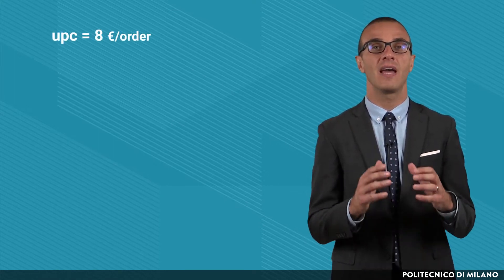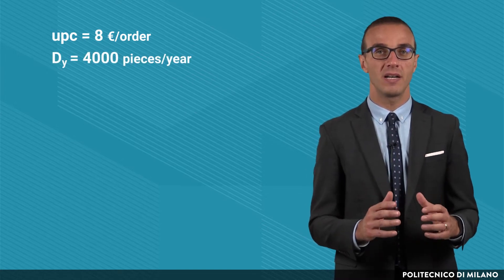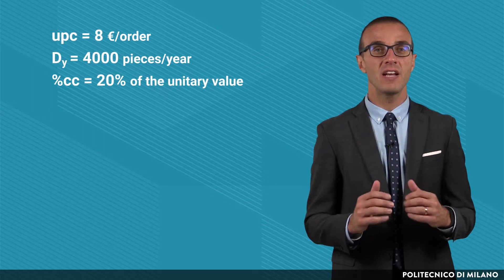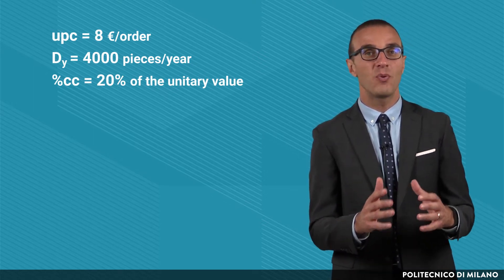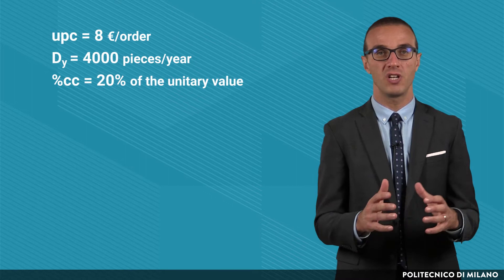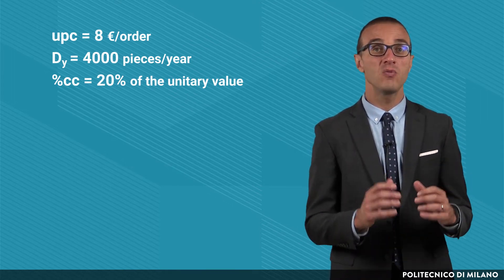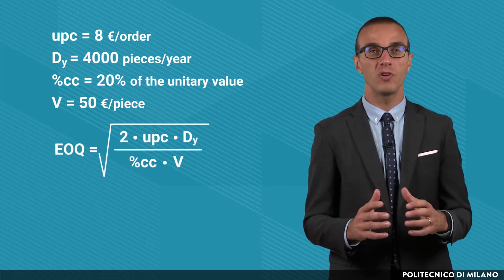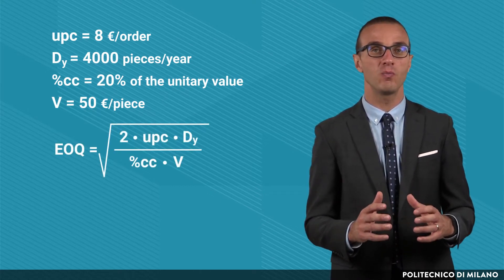In order to better understand the methodology, I am going to show you an example of how to calculate the EOQ. The input data of the problem are: the unitary procurement cost, which is 8 euro per order; the yearly demand, which is 4000 pieces; the inventory carrying cost, expressed as a percentage of the item value, which is 20%; and the unitary price of the item, which is 50 euro.